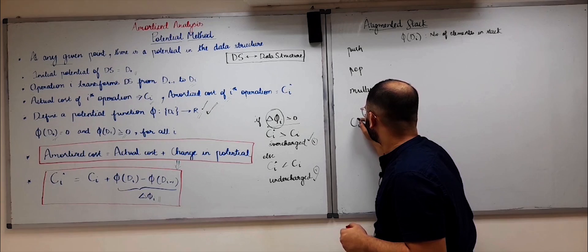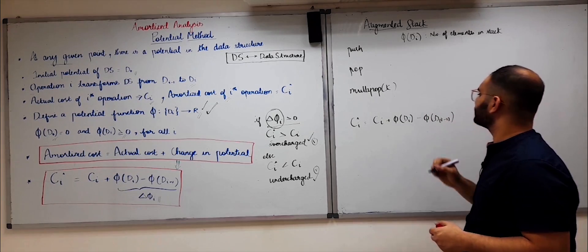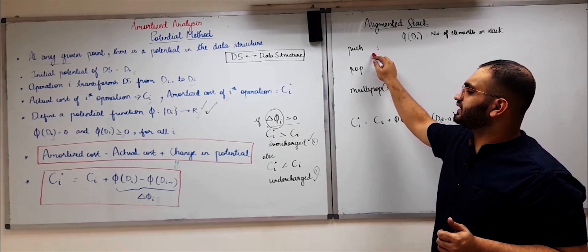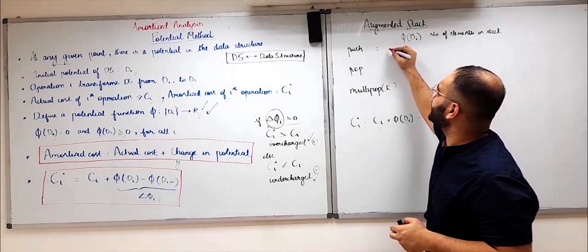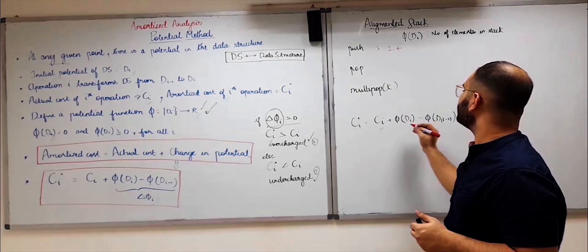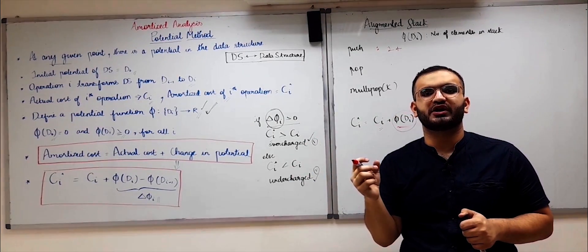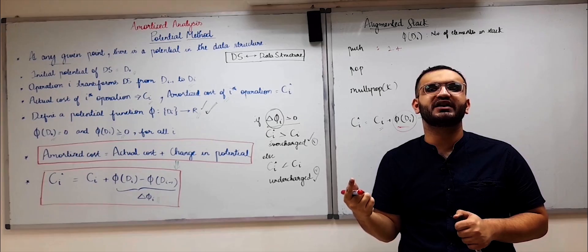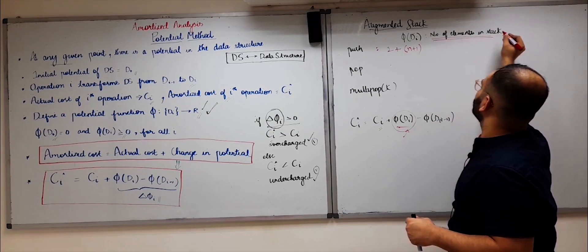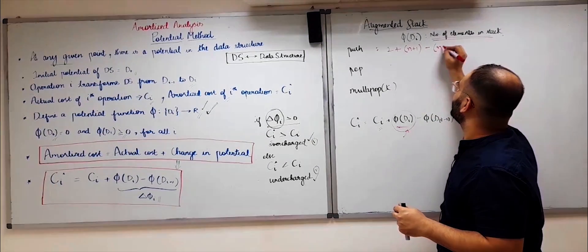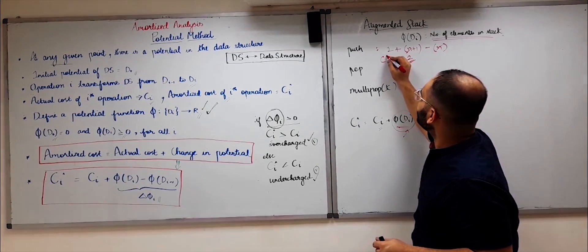We will use the formula c_i_cap = c_i + Φ(d_i) − Φ(d_(i-1)) to find the amortized time complexity for the augmented stack operations. For a single push, the actual cost is 1 (constant time). If we assume there were n elements in the stack before the push, after a single push the number of elements becomes n+1. So the final potential is n+1 and the initial potential is n, giving: 1 + (n+1) − n = 2. So the amortized time complexity for the push operation is 2.